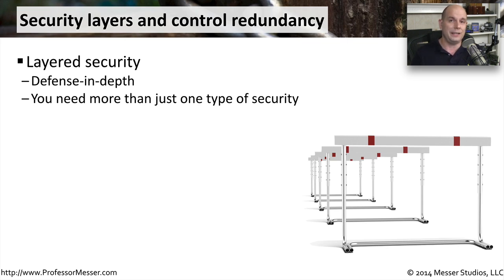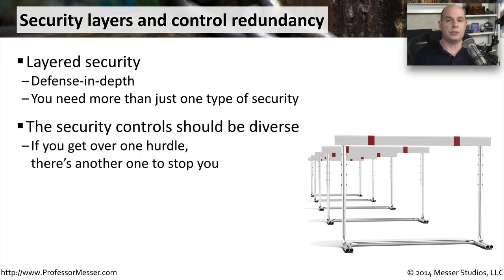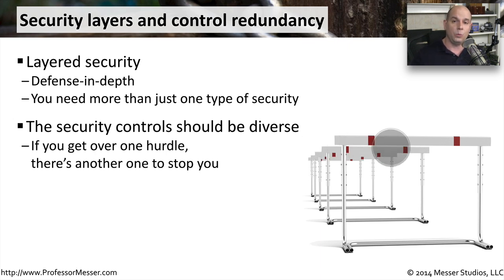There's never just one single security device in place. We want to have different strategies and different processes in place so that we can, every step along the way, prevent that particular security risk from getting through our system. The security controls themselves should also be very diverse. It might be a little different than the picture that shows exactly the same hurdle one after the other. Instead, we might have hurdles that were different sizes and different widths to prevent the same type of attack from getting through our system. We would want to have different firewalls and different IPSs, and different processes all working together to have this defense in depth.